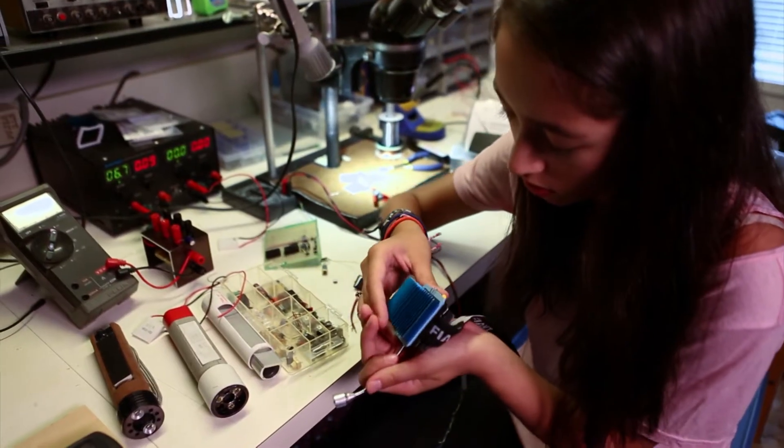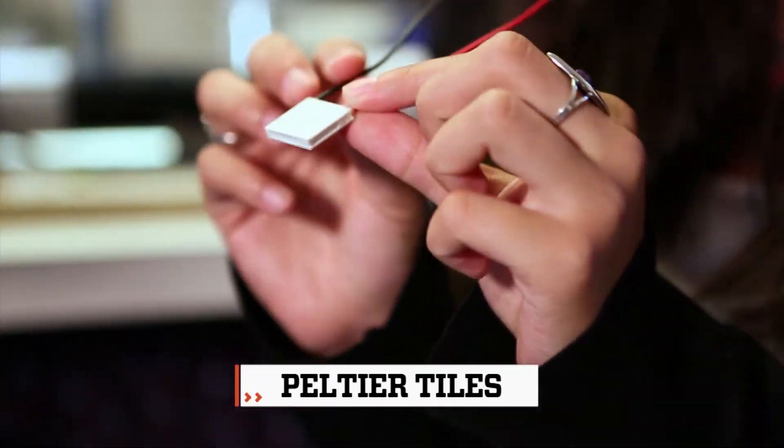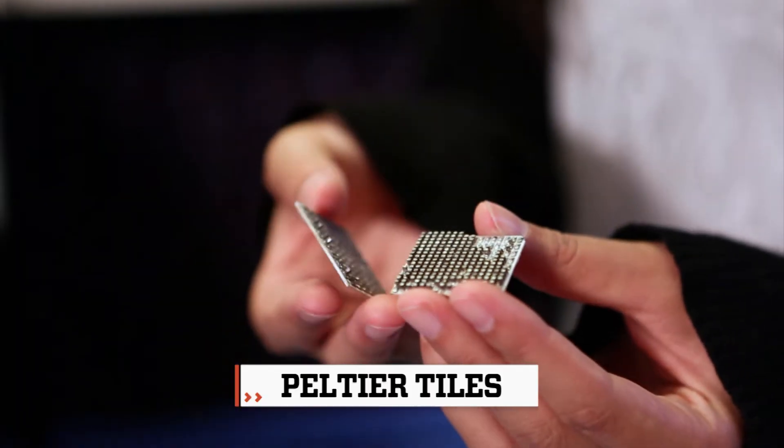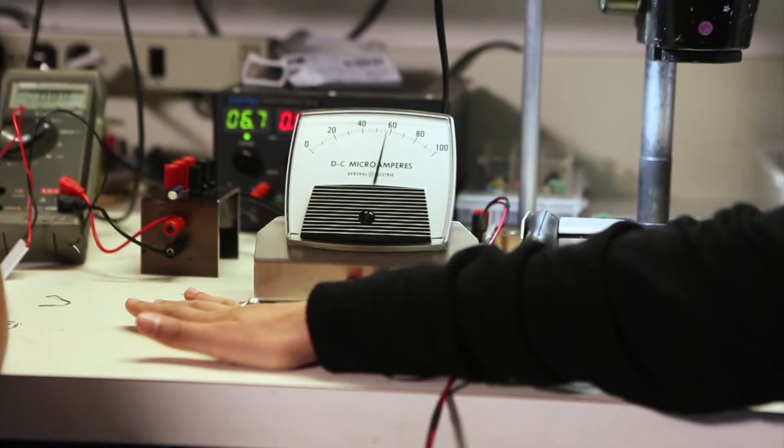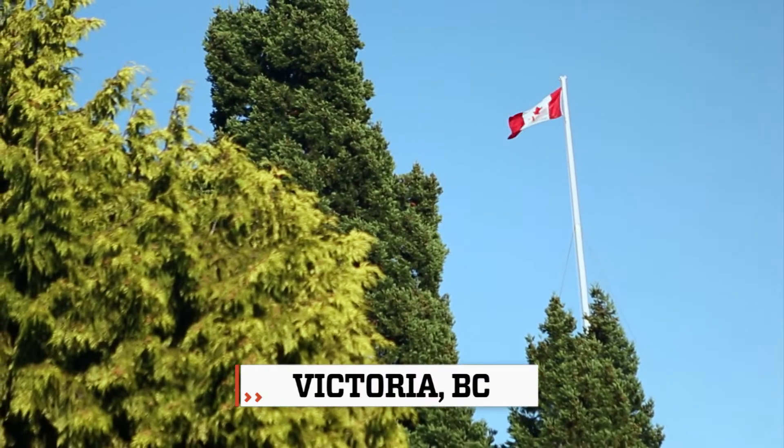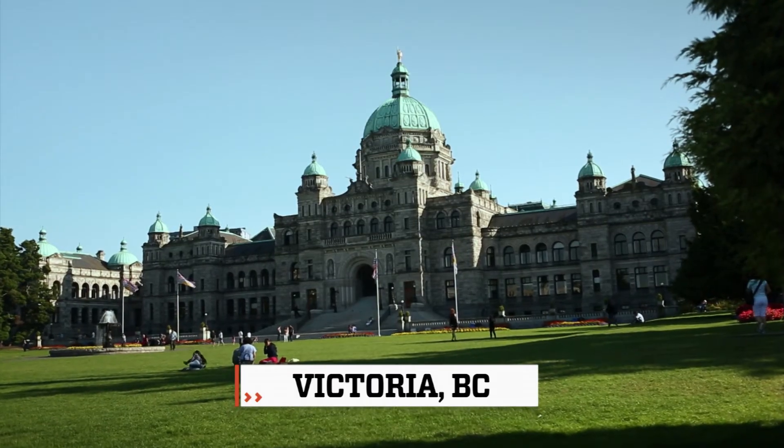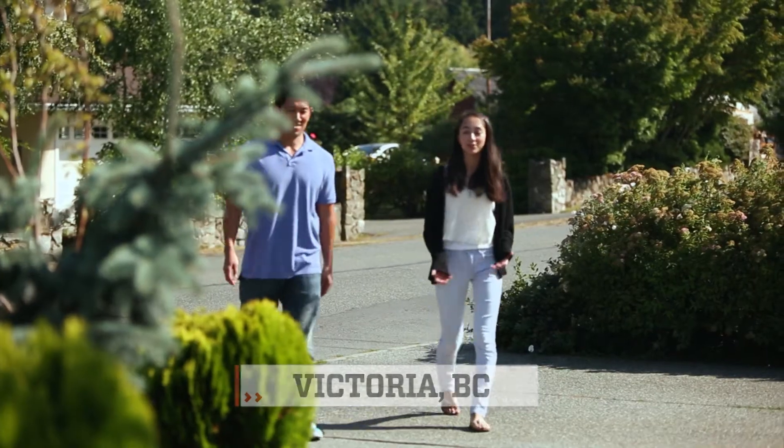The problem is, flashlights rely on battery power. Ann had to find an alternative solution. I decided to harness the thermal energy of humans, using something called Peltier tiles. Peltier tiles are made of ceramic and an alloy called bismuth telluride that generate electrical charges when different temperatures are applied. I ventured to Victoria, British Columbia, Canada to find out what inspired Ann's scientific spirit.